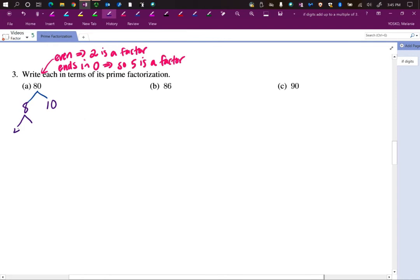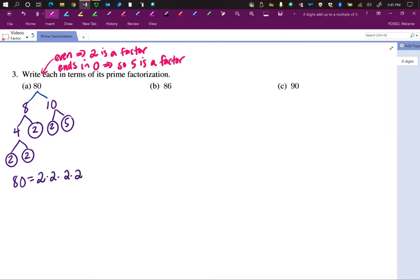So 8 is 4 times 2. I circle the prime. And then 4 is 2 times 2. Both of these are primes, so I circle them. Then I look at the prime factorization for 10. That's 2 times 5, and both of those are primes. So then we look at 80, and that's 2 times 2 times 2 times 2. We always write them in order. Notice I have 1, 2, 3, 4 of those times 5.